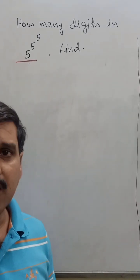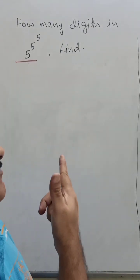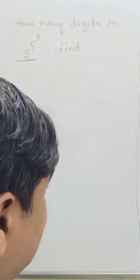How many digits in 5 to the power 5 to the power 5? Find the number of digits in this number.